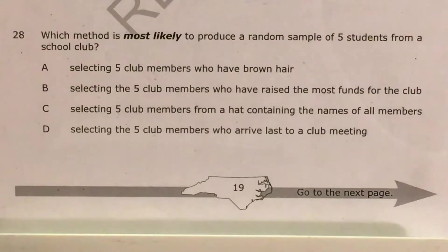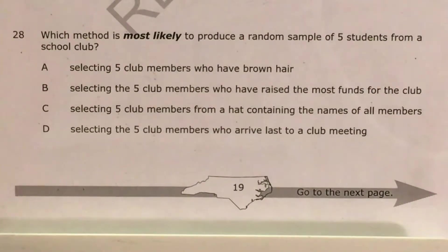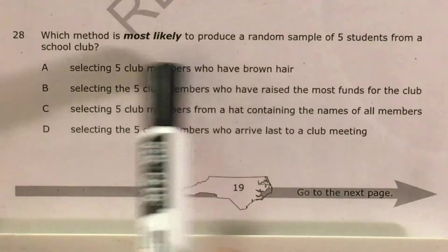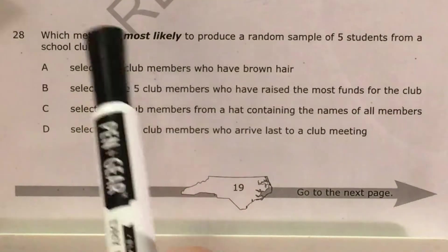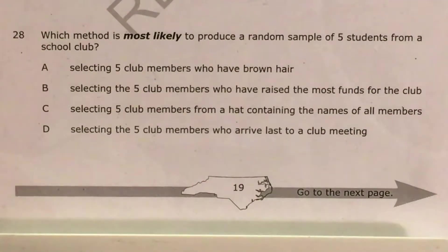What's up, math scholars and math haters? This is Mr. W. Today we're going to tackle question 28 in the math three questions that North Carolina released this past school year. The question is just asking us to say which answer choice, which method is most likely to produce a random sample of five students from a school club.